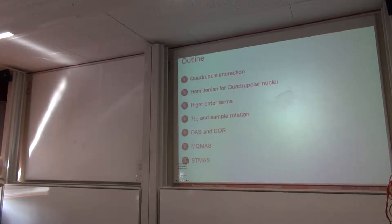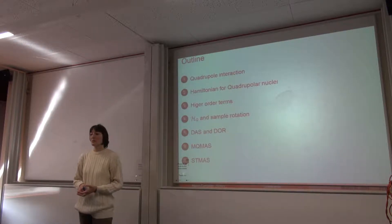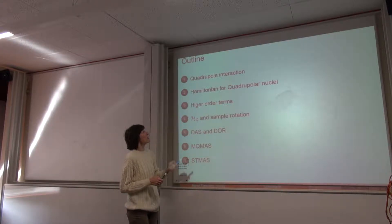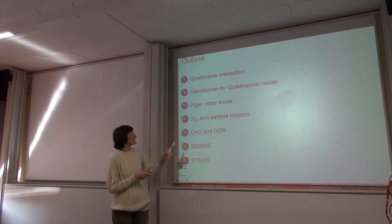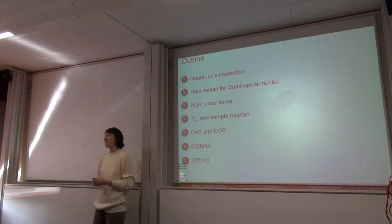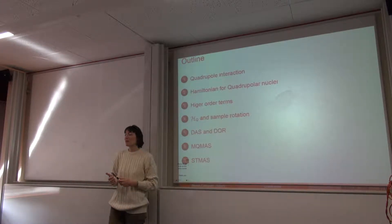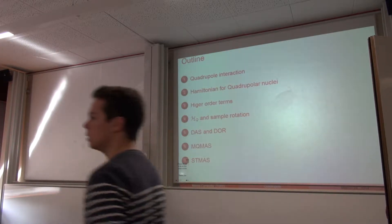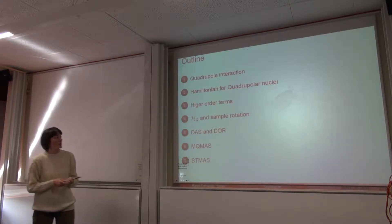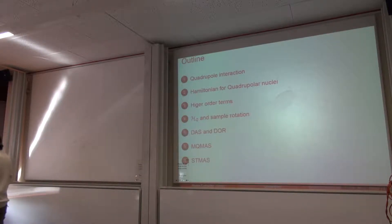Today we talk about quadrupolar interactions. The topics we will cover include: an introduction to the quadrupolar interaction, the Hamiltonian for quadrupolar nuclei, higher-order terms, the effect of sample rotation on the quadrupolar interaction, and methods to get high resolution for quadrupolar nuclei based on mechanical manipulation of the sample — specifically DAS and DOR — as well as pulse sequences.